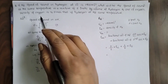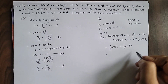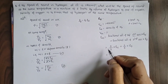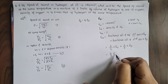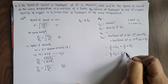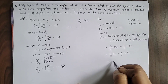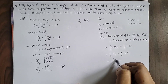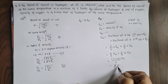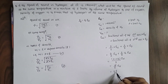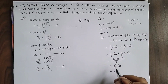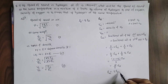The density of oxygen is 16 times the density of hydrogen. So the density of mixture = (2/3)ρ_H + (1/3)(16ρ_H) = (2/3)ρ_H + (16/3)ρ_H = 18/3 × ρ_H = 6ρ_H. Therefore, the density of the mixture ρ_m = 6 times the density of hydrogen.